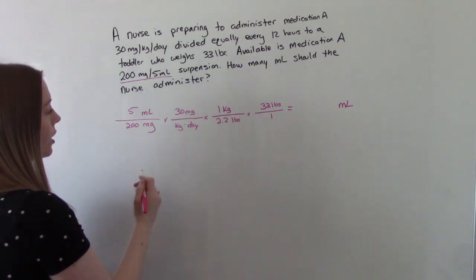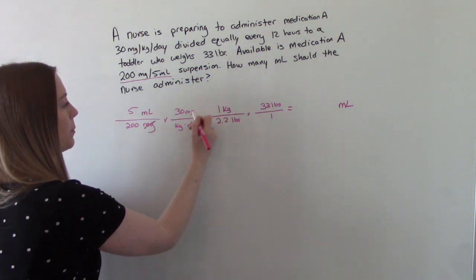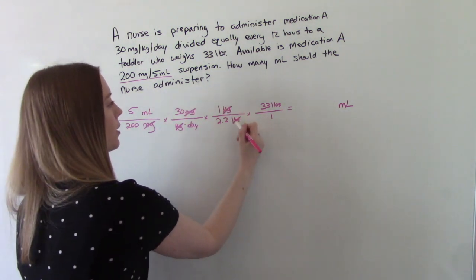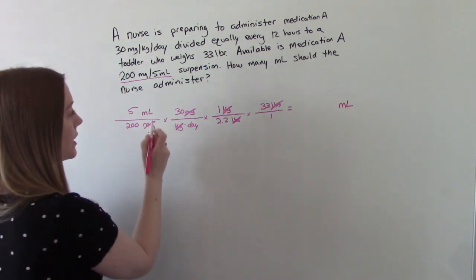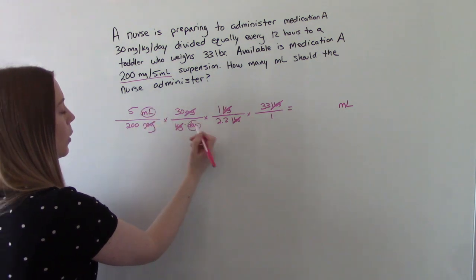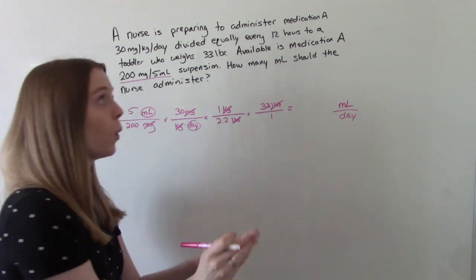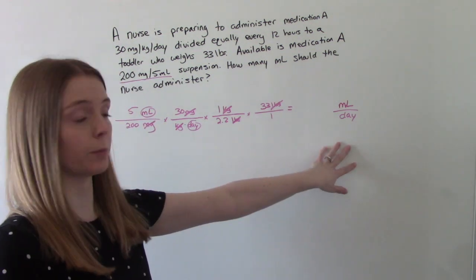So we can start crossing stuff off now. So cross off our milligrams, cross off our kilograms, and cross off our pounds. So this is going to leave us with ml's over day. So that's important at this point to know that we're doing total in a day at this point in the problem.